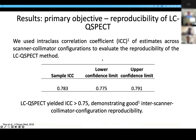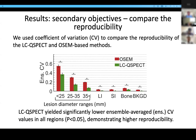For the primary objective of this trial, we used intraclass correlation coefficient of the estimates across SPECT scanners and collimator configurations to evaluate reproducibility of the LCQ-SPECT method. As shown here, LCQ-SPECT yielded ICC greater than 0.75, demonstrating good inter-scanner configuration reproducibility. For our secondary objectives, we also compared the reproducibility of LCQ-SPECT with OSEM using the coefficient of variation. LCQ-SPECT yielded significantly lower sample-average coefficient of variation values in all regions, demonstrating higher reproducibility.